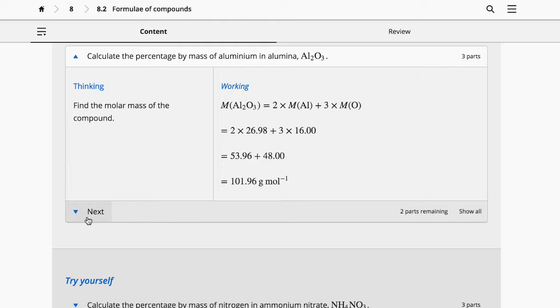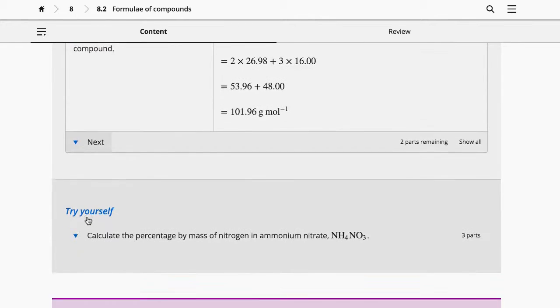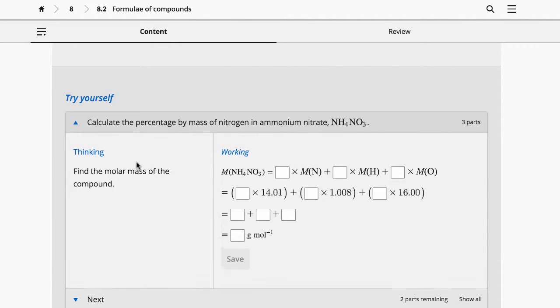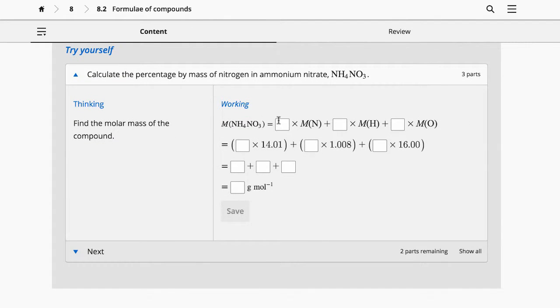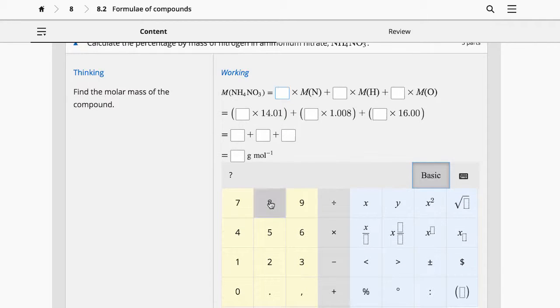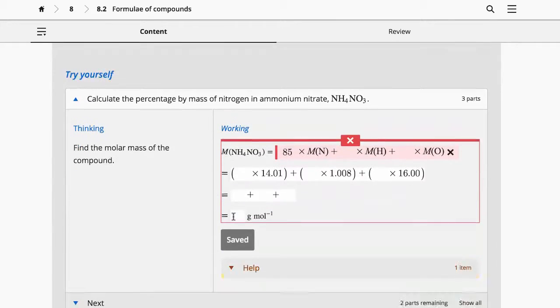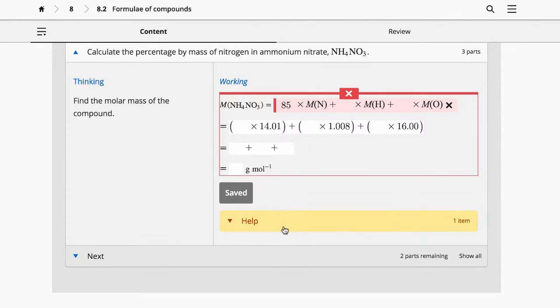After you have worked through the understand section of the worked example, you can then have a go at a similar problem in the try yourself. In try yourself worked examples, some parts of the working have been left blank for you to complete. If you don't know the answer for a step, you can ask for help.